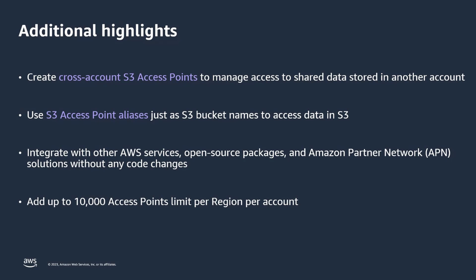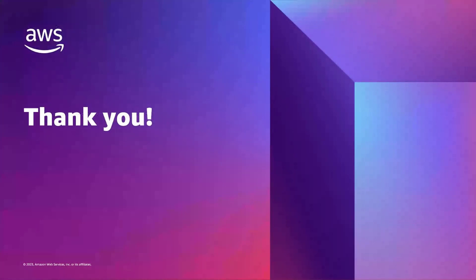There's a soft limit of up to 10,000 access points allowed within a region per account. That means you can scale access management to thousands of use cases at the same time. As your organization looks to innovate faster and at scale, you need ways to securely manage access to your shared data. Amazon S3 access points simplifies the work of creating, sharing, and maintaining access to your shared S3 buckets. With separate discrete access point policies for each application, you can focus on building the right access policy for an application without worrying about other applications accessing the same shared dataset.